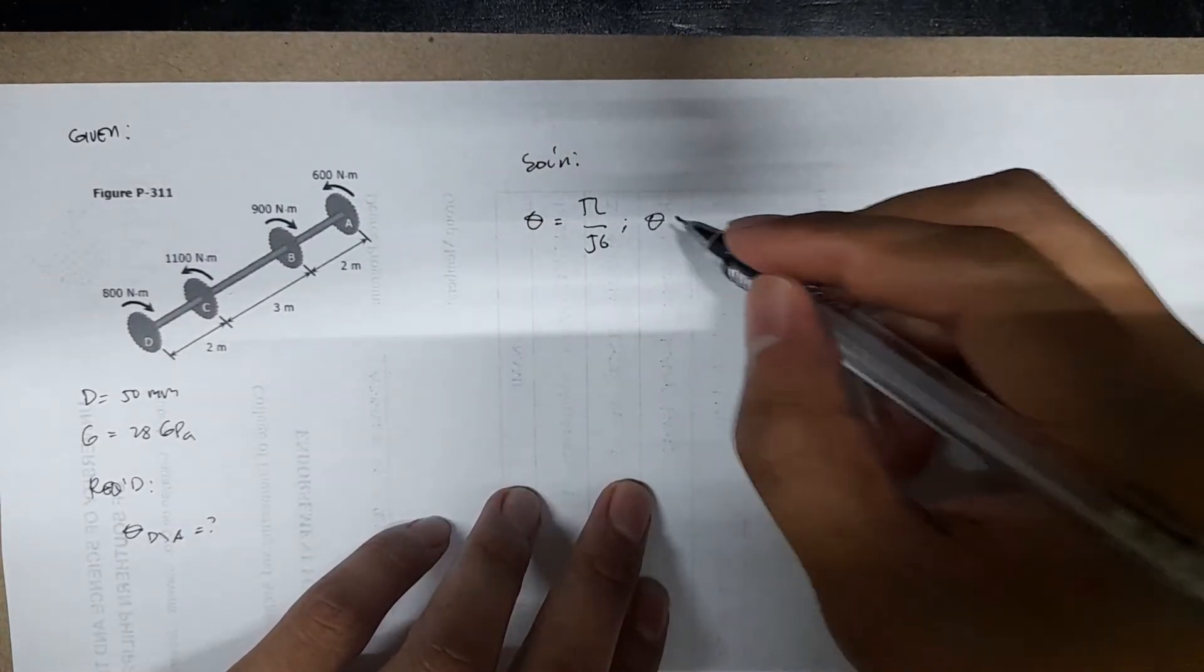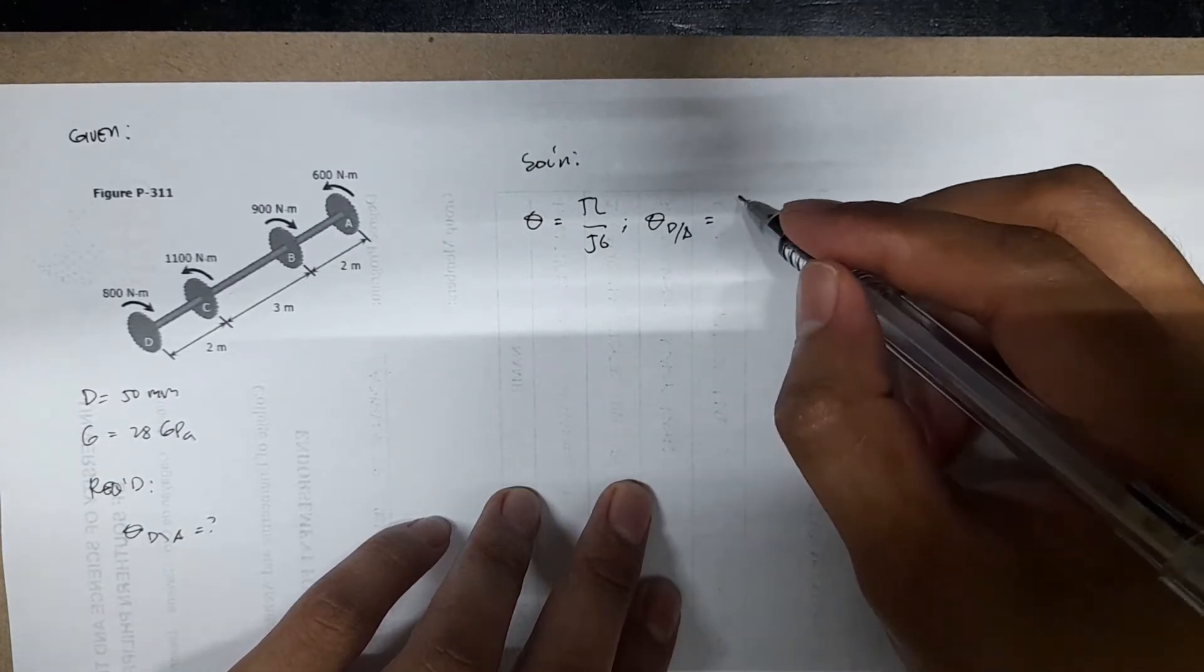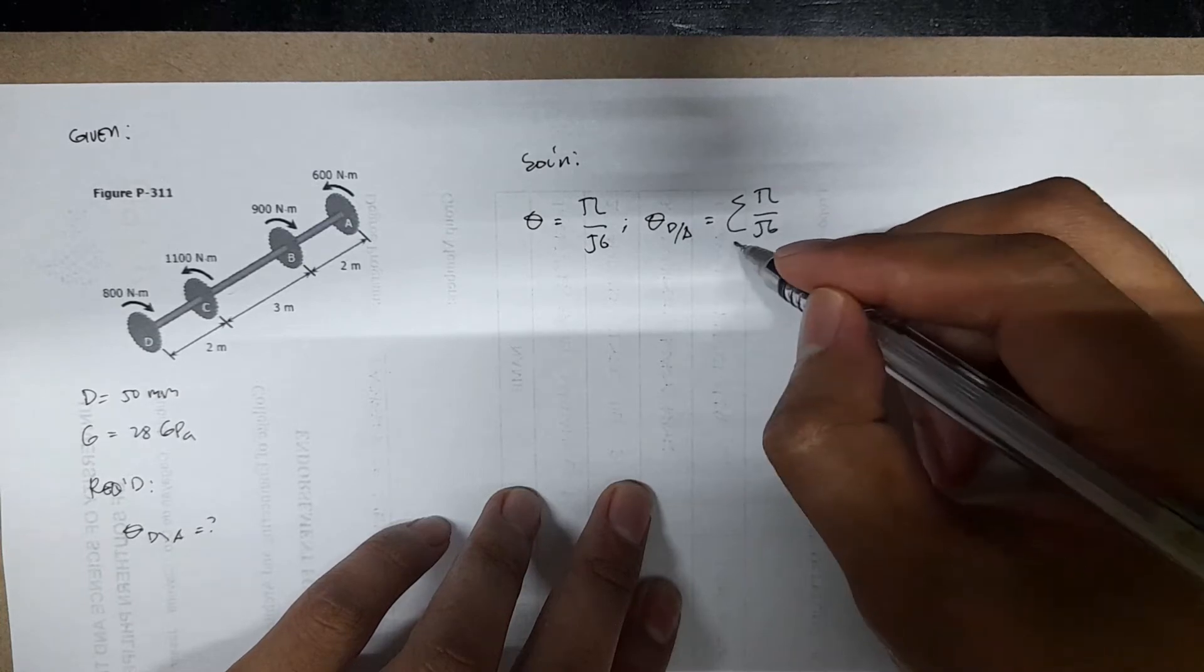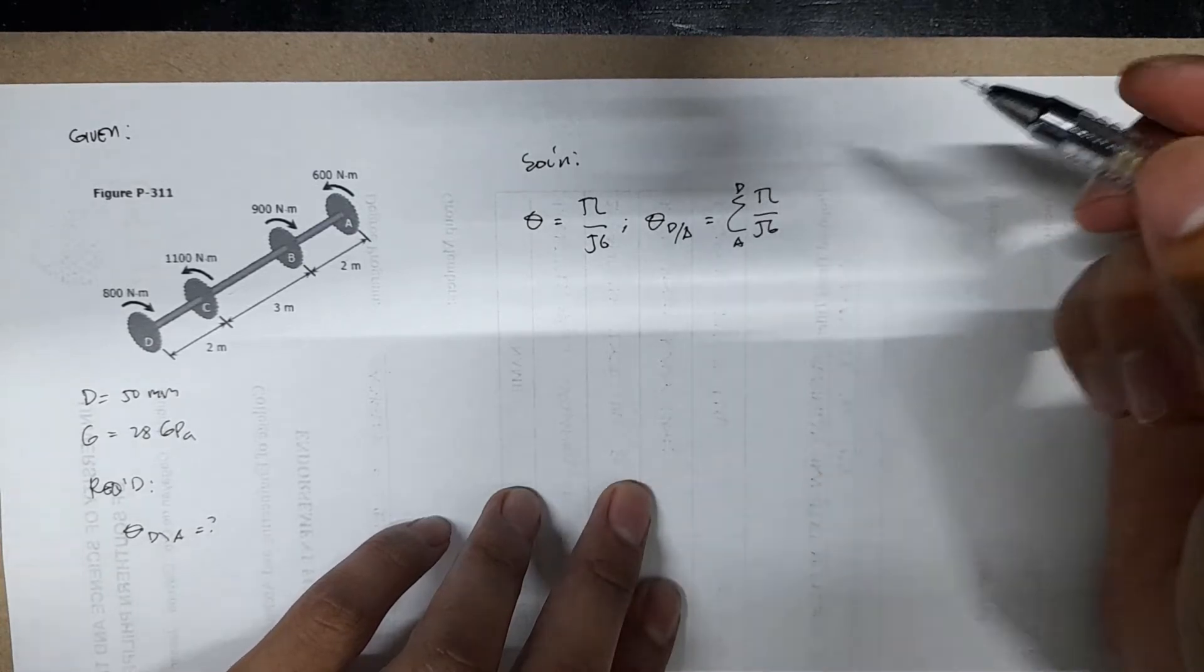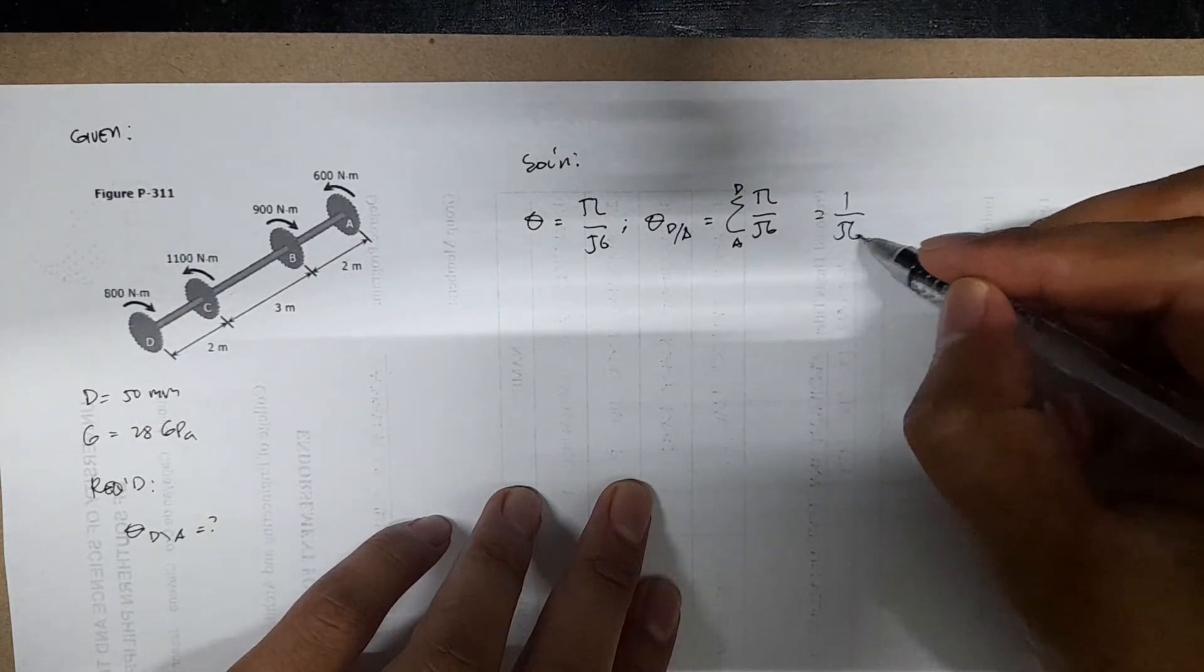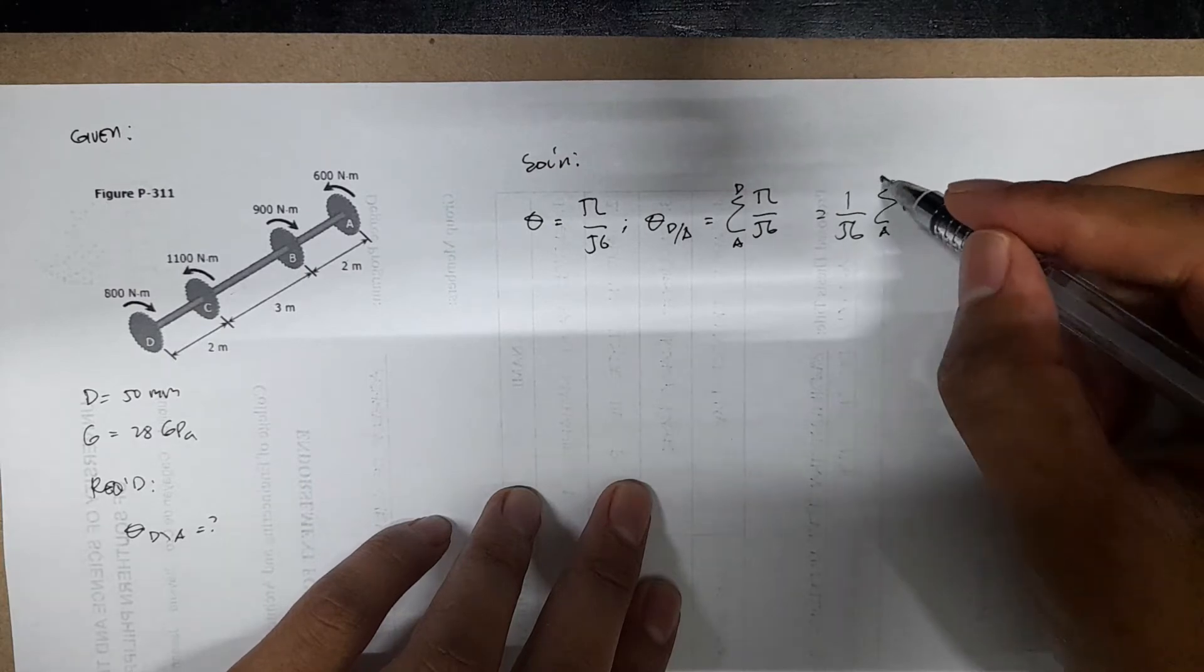And then you'll have the angle of twist from D relative to A is equal to the summation of the angle of twist from A to D. So J and G are constant, so we can take them out: 1 over JG, summation of TL from A to D.